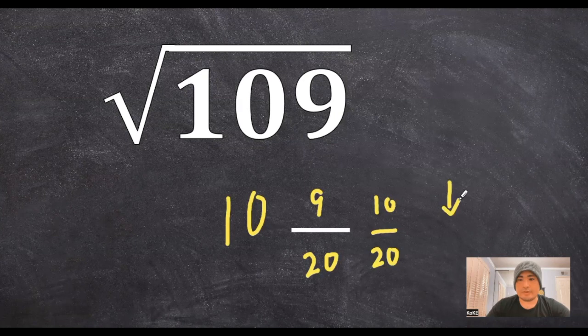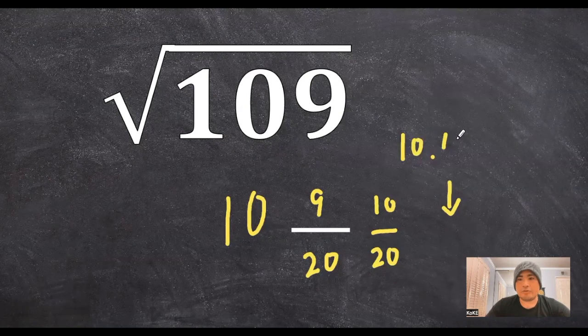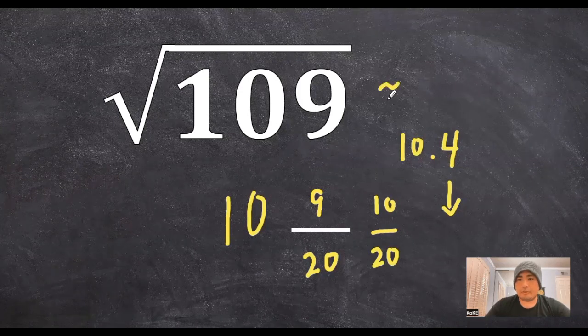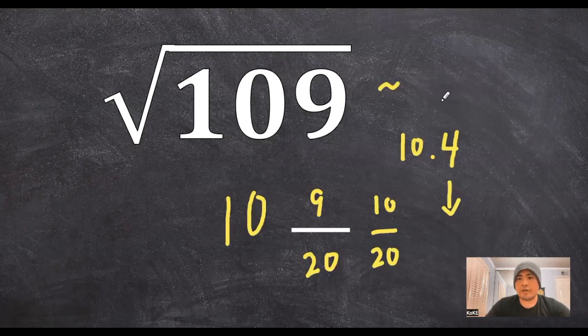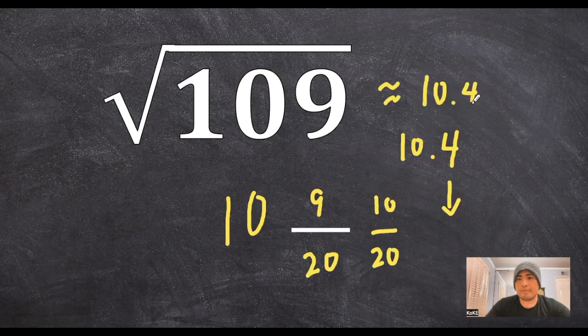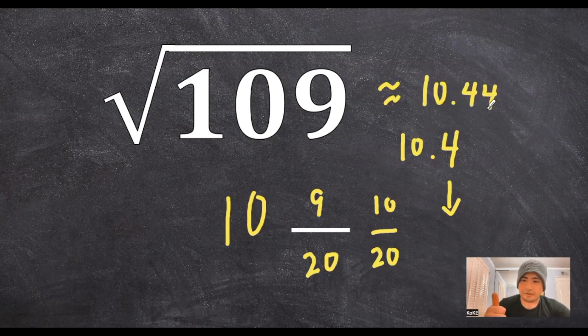So if we take one decimal down, we can say that the decimal approximation would be 10.4. And then when we double check our answer on the calculator, it approximates to roughly 10.44, which again is awfully close.